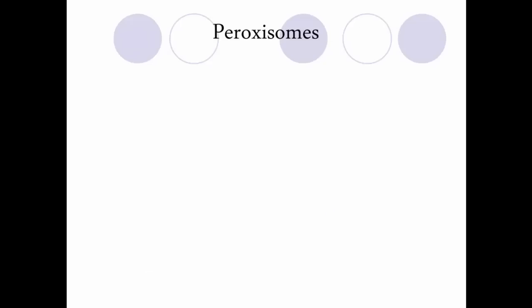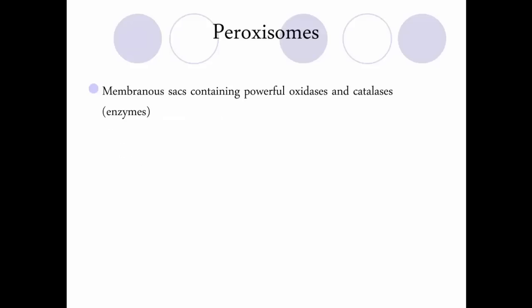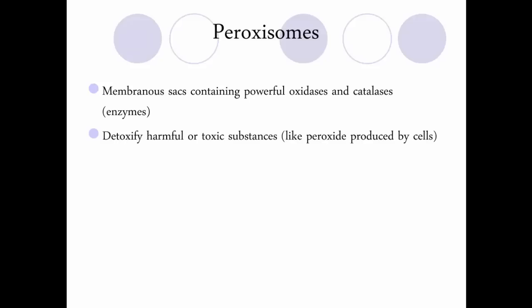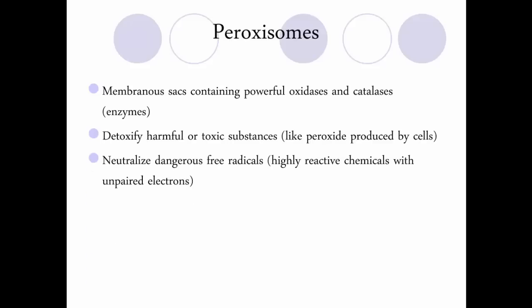Peroxisomes are membranous organelles with powerful enzymes inside. Their job is to detoxify harmful or toxic substances — cells produce toxic substances as byproducts of their processes, including peroxide. The peroxysome breaks down those harmful substances and also neutralizes free radicals, which are highly reactive chemicals with unpaired electrons. Peroxisomes give free radicals something to bond to that is not harmful.